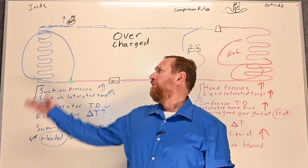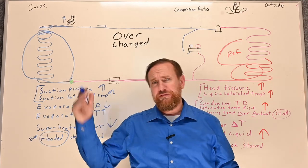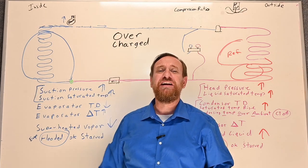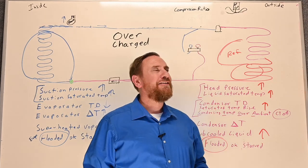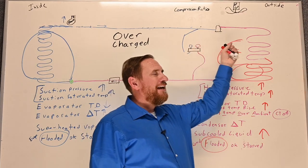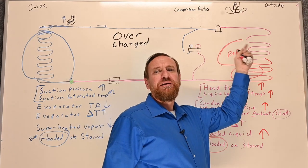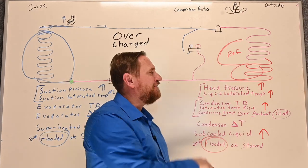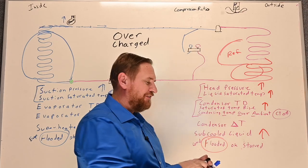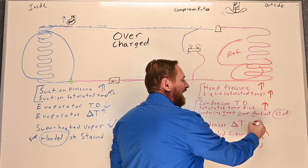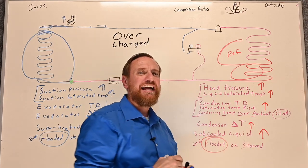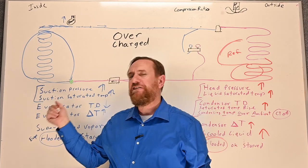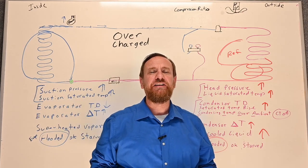You'll see people say they overcharge systems all the time and never have problems — but you're still causing damage to the customer's compressor. It doesn't happen right away, but it's still happening. We're absorbing more heat inside and rejecting it outside, which exaggerates all these issues, and you'll typically see a higher condenser delta T on the outside. That's how an overcharged system is going to affect a fixed orifice metering device.